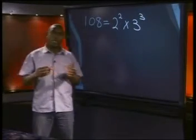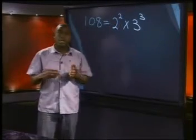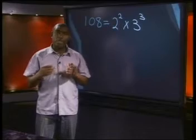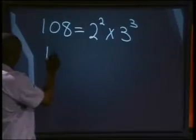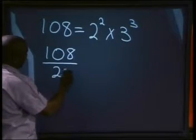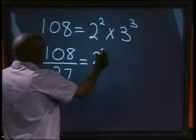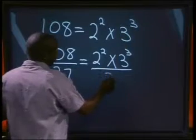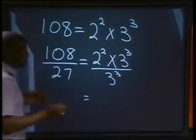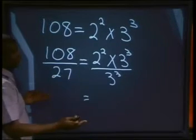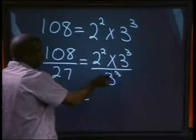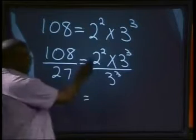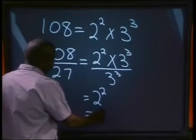Every natural number, no matter how large, can be written as a product of prime numbers. Calculations with large numbers become much simpler if you write them as powers and products of prime numbers. For example, let's calculate 108 divided by 27. We said 108 equals 2 squared times 3 cubed, and 27 equals 3 to the power of 3. Applying the law that when bases are the same we subtract the exponents, we get 3 to the power of 3 minus 3, which is 3 to the power of 0 — which equals 1. So our answer is 2 squared, which equals 4.